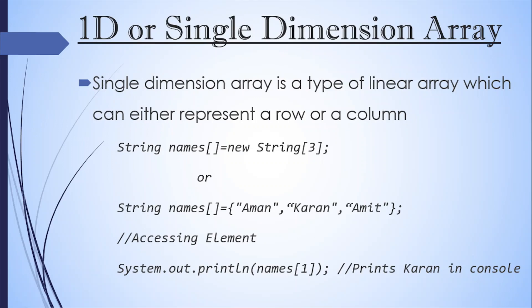We have two types of arrays. One is single dimension, other one is multi-dimension. Single dimension array is a type of linear array which can either represent a single row or a column. So if we want to create an array of string to store a list of names, we can do it like this. So string names, then brackets and using new keyword and string, then we need to provide the size of array in those brackets. So here we are mentioning three.